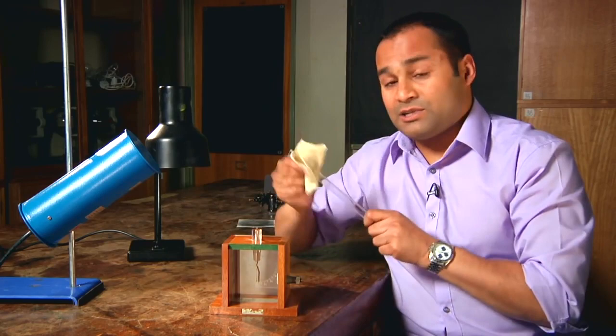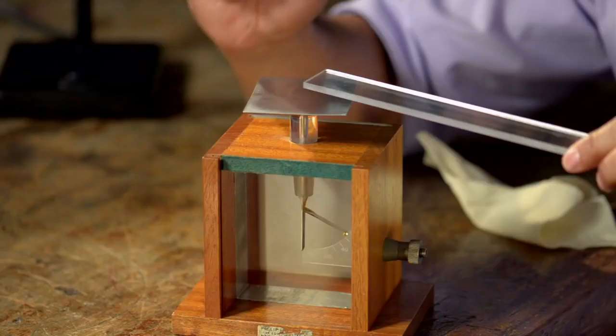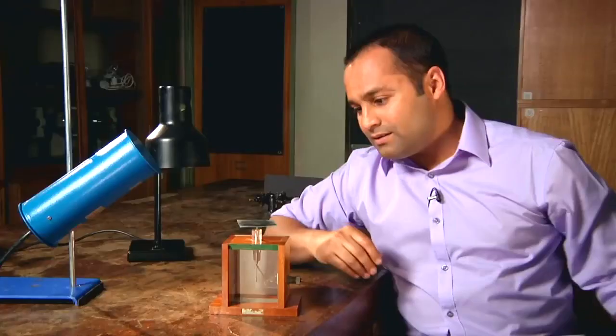Now let me show you that again. I've got a perspex rod here which I can make positively charged by rubbing with this bit of cloth. I bring the rod close to the plate, touch the plate with my finger, remove my finger, then remove the rod.